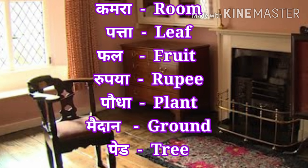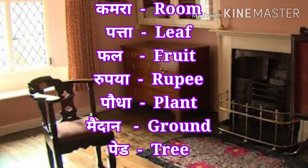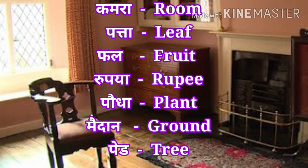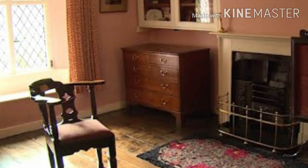My dear children, I hope you have learned some masculine gender words. What are they? Kamra — room. Patta — leaf. Phal — fruit. Rupiya — rupee. Paudha — plant. Maidan — ground. Ped — tree. Go through these words and try to learn more. Hari Om children.